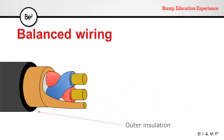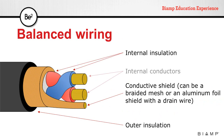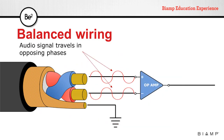Balanced cables also have an outer insulation, and inside we can find a conductive shield that can be a braided mesh or an aluminum foil shield with a drain wire. Internally, we're going to have two conductors. These two conductors are the ones transporting the signal. In balanced wiring, the signal will travel using those two conductors, but one conductor will be in opposite phase to the other one.